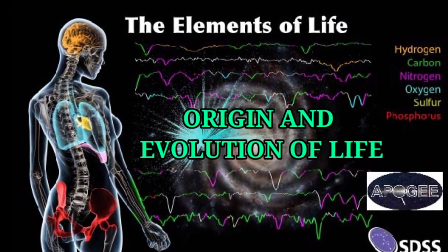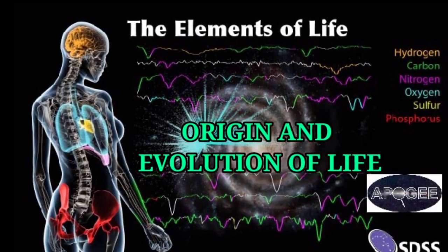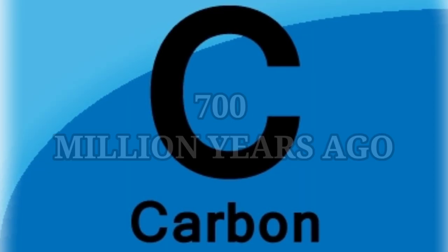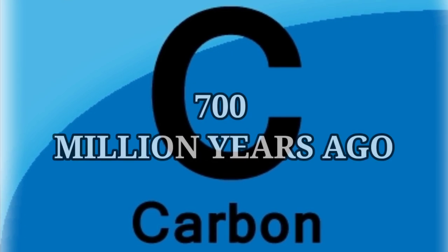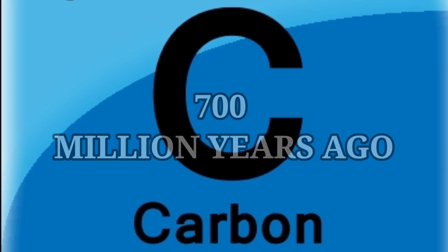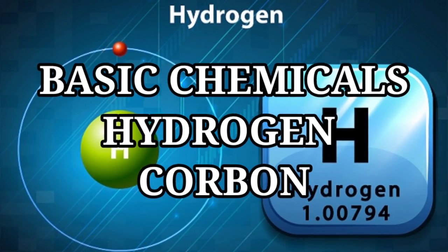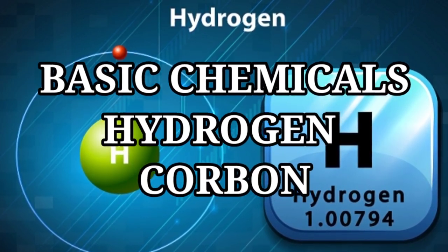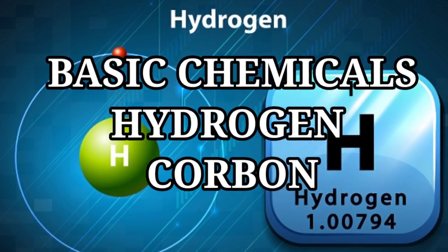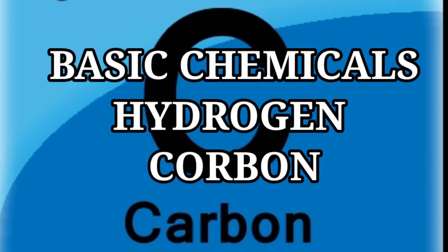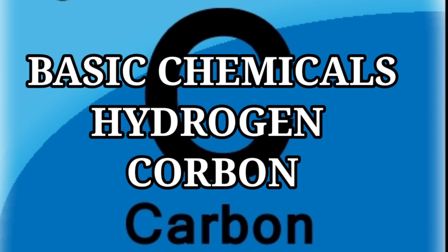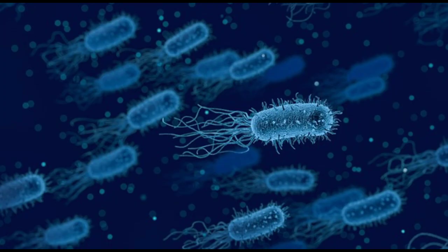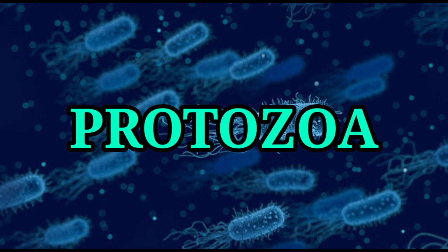The first topic is origin and evolution of life. There are many theories regarding the origin of life on earth. According to the most popular theory, about 700 million years ago the basic chemicals in the earth's atmosphere — hydrogen and carbon — somehow combined to form life in the water. This slowly evolved into primitive water plants.